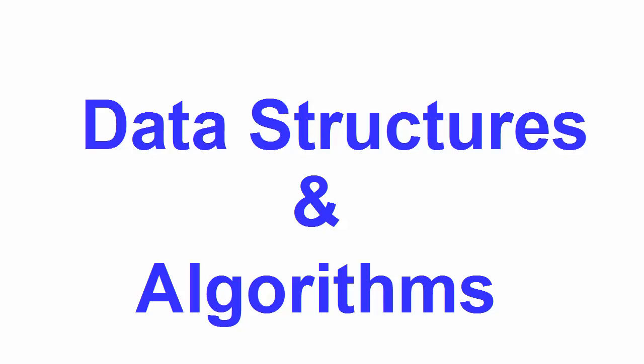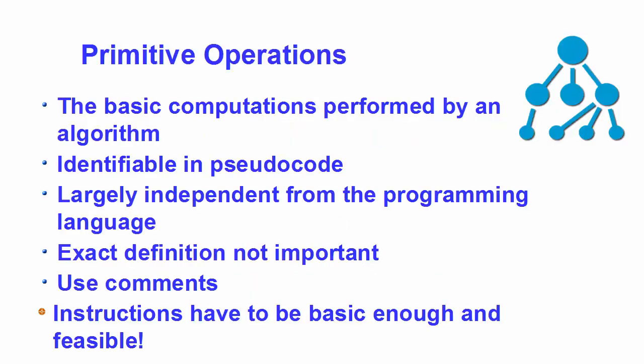We have already learned that the efficiency of an algorithm is measured by the number of basic operations or primitive operations. These primitive operations are the basic computations performed by an algorithm, identifiable in pseudo code easily. Largely, these primitive operations inside an algorithm are independent from the programming language, the machine, or the compiler.